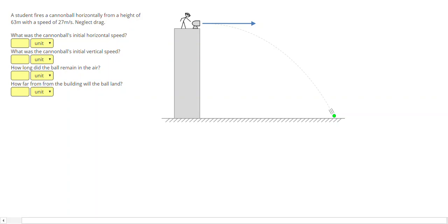A student fires a cannonball horizontally from a height of 63 meters with a speed of 27 meters per second. So in this problem, it's a complete problem where you have an object moving in a curved path, so it's a two-dimensional motion problem.